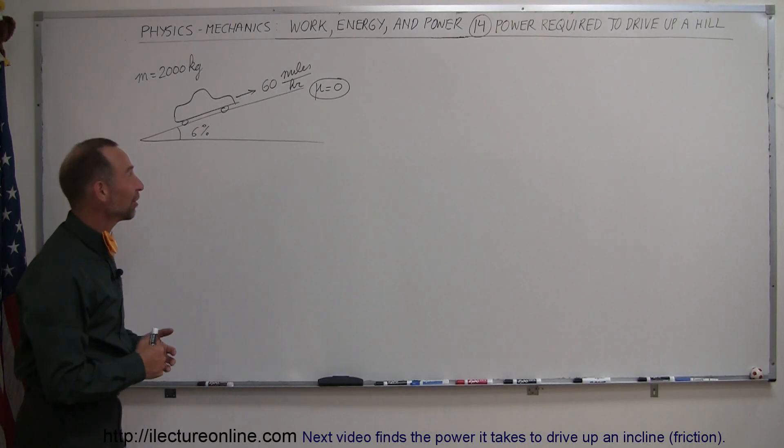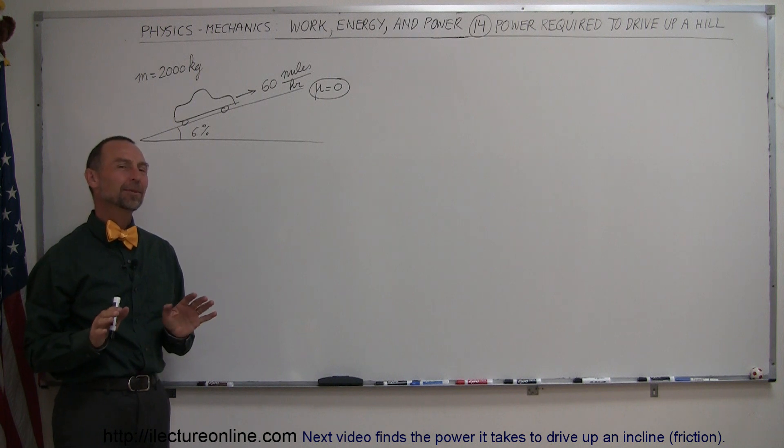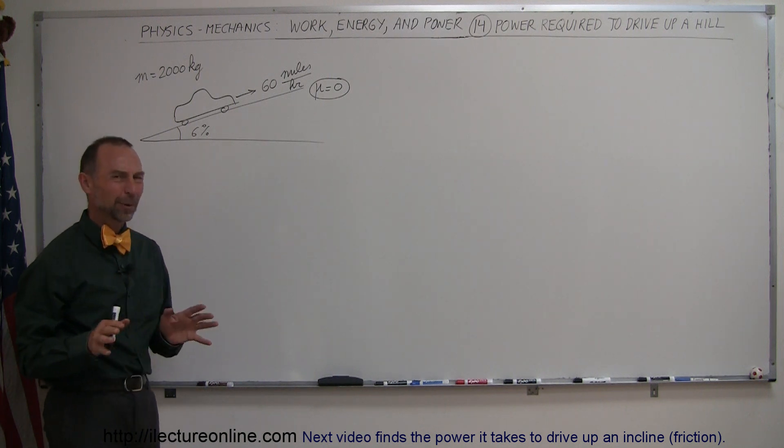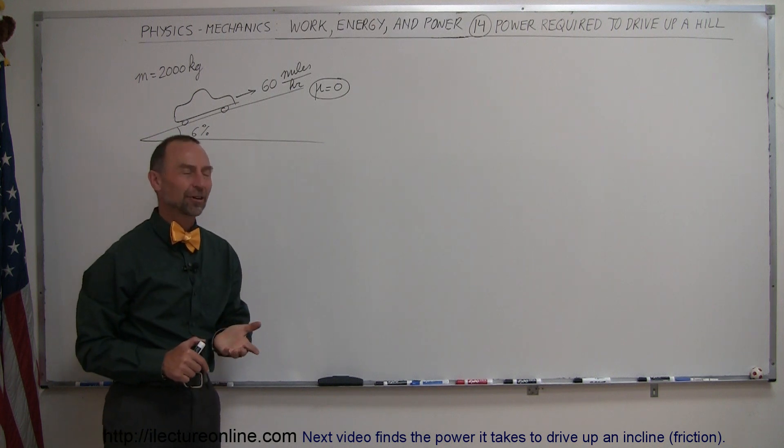In our next example, we have a car driving up a hill at 60 miles per hour. To keep things simple, theoretically, there's not going to be any friction, so no energy loss due to friction.